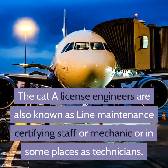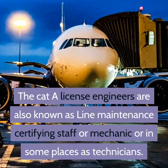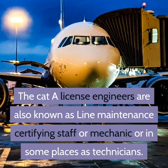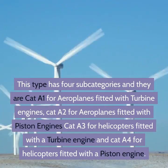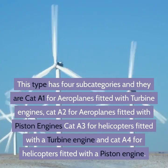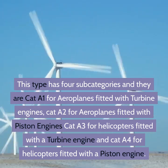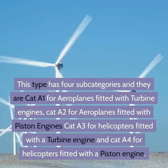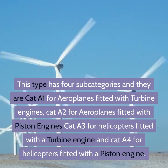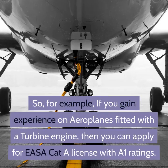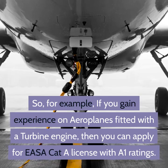Category A license engineers are also known as line maintenance certifying staff, mechanics, or technicians. This type has four subcategories: Cat A1 for aeroplanes fitted with turbine engines, Cat A2 for aeroplanes fitted with piston engines, Cat A3 for helicopters fitted with a turbine engine, and Cat A4 for helicopters fitted with a piston engine.